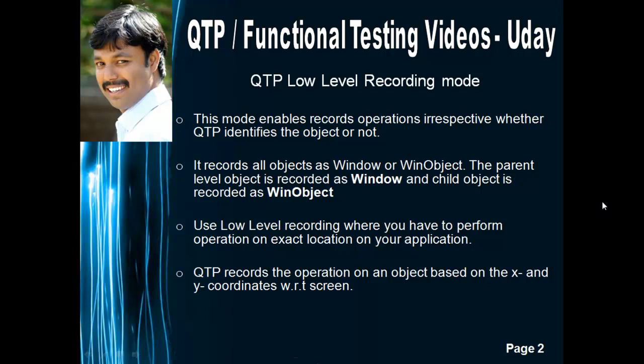In normal recording mode, QTP can identify the object. For example, if you are entering some value in a web edit, the statement generated will be something like Browser > WebEdit, and a set operation will be performed. But in low level recording mode, even if objects in your application are not identifiable by QTP, you can still record the operation.